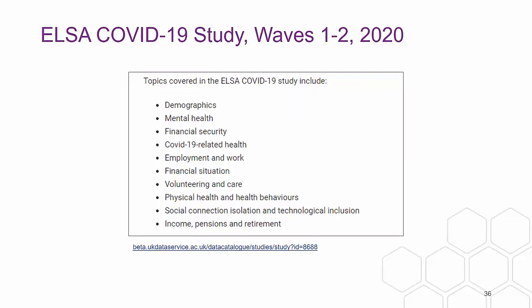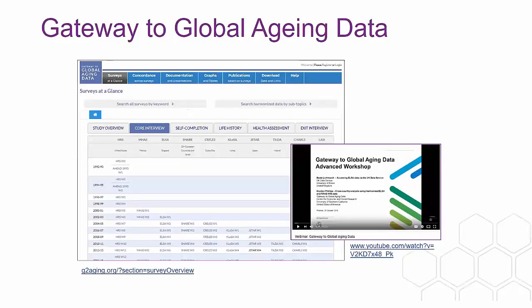The ELSA COVID-19 study, which reacted quickly in 2020, covers mental health, financial security, employment, financial situation, volunteering, physical health and health behaviours, social connection, isolation and technological inclusion, and income, pensions and retirement. There is also an international platform called Gateway to Global Aging Data — ELSA feeds into it, aiming to harmonise ageing data from different countries. We have a webinar on this particular issue with the URL provided.